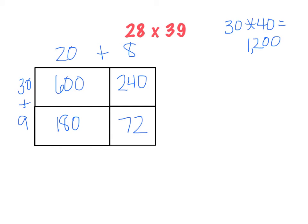And I'll add all of those numbers up. So 600 plus 240 plus 180 plus 72. So 1,092. So I'm going to just check. My answer is in the thousands place. My estimate is in the thousands place. That looks pretty good.